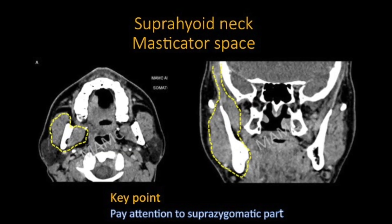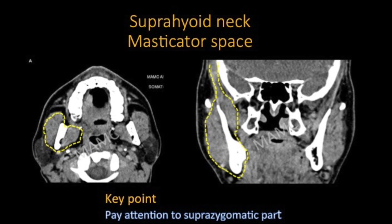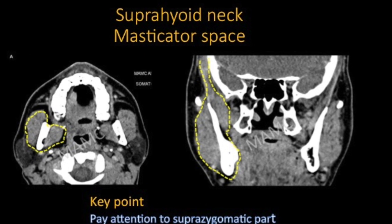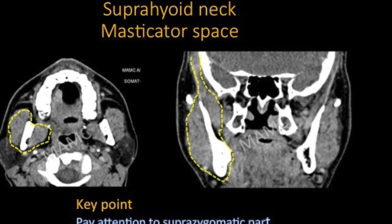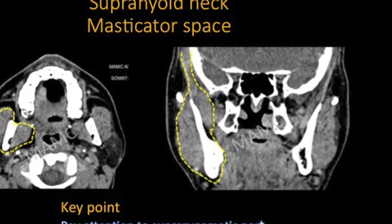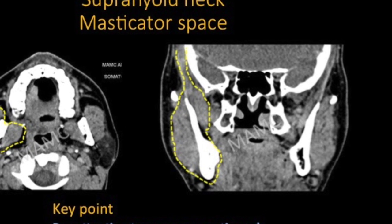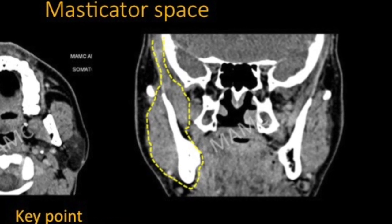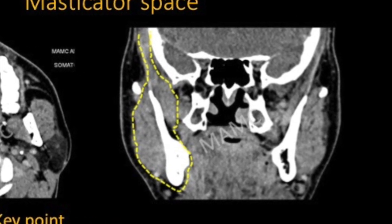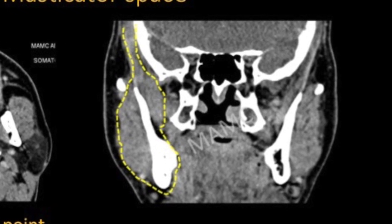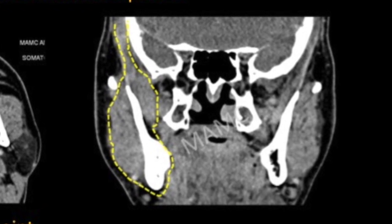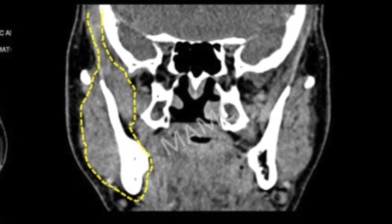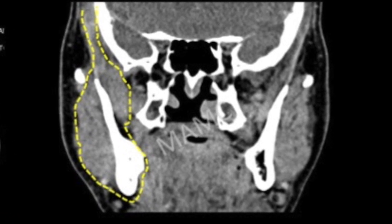This is how we see it on the coronal scan — the mandible along with the muscles of mastication. What we need to pay attention to is the suprazygomatic part where the temporalis muscle is arising from the scalp. All pathologies of the masticator space can extend superiorly to involve this portion, so remember to pay attention to this part as well.